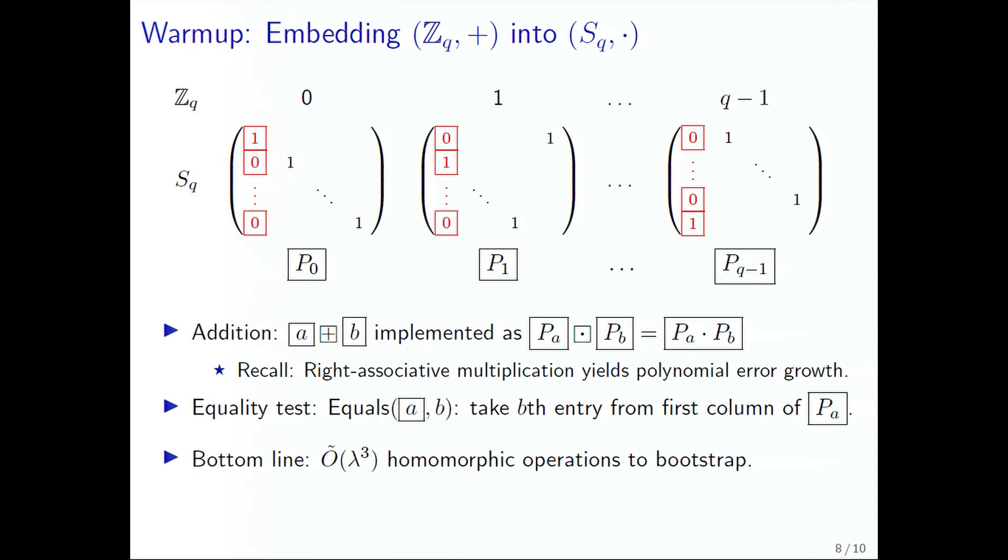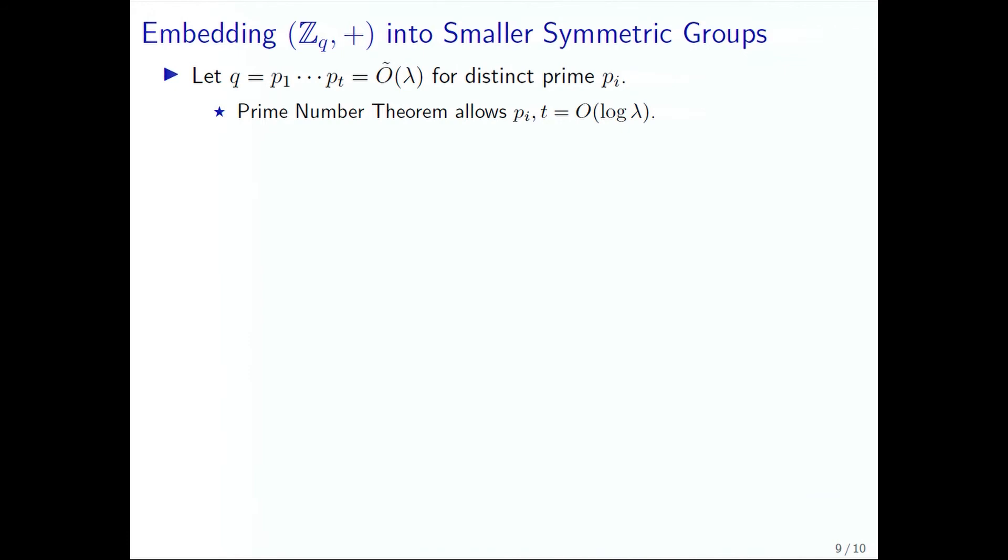However, we can actually do significantly better. We do so by choosing, instead of choosing Q arbitrarily, we choose it to be a product of a large number of distinct primes P_i. By the prime number theorem, we can have the primes be at most size logarithmic in the security parameter and have about a logarithmic number of different prime numbers. We recall the Chinese remainder theorem, which says that Z_q is isomorphic to the product of the Z_{P_i}s. Here we embed each mod P_i part into the symmetric group on P_i letters, and we embed each integer X into a component of X into the proper permutation matrix.